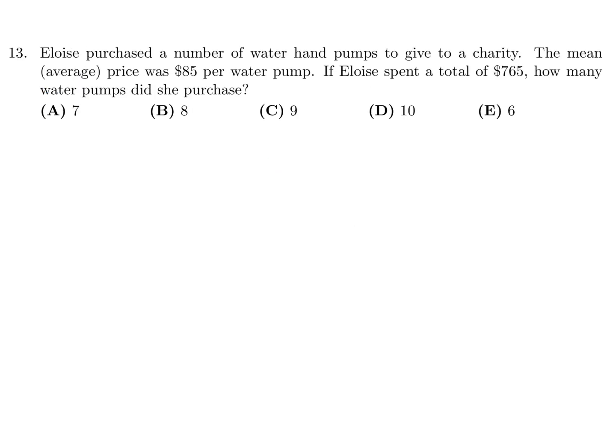Eloise purchased a number of water hand pumps to give to a charity. The mean average price was $85 per water pump. If Eloise spent a total of $765, how many water pumps did she purchase? 765 divided by 85 — that's the math — and that is 9. The answer is C.